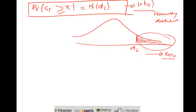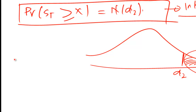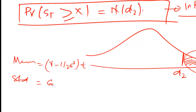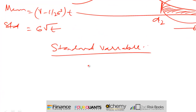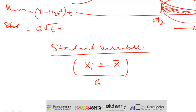We have a distribution — we know it's normally distributed with mean r minus half sigma squared times t, and standard deviation sigma times the square root of t. To estimate a standard normal variable, we use the formula: (xi minus x-bar) divided by sigma, where xi is the observed value, x-bar is the expected value or average, and sigma is the standard deviation.